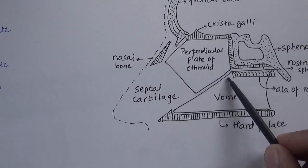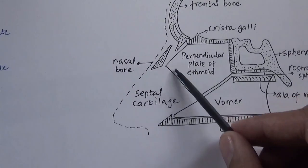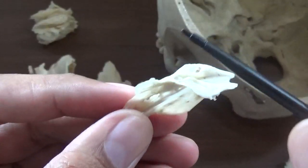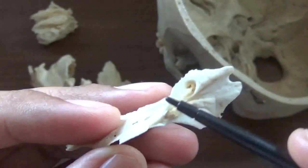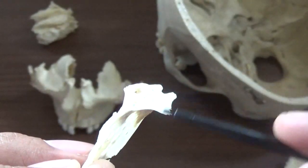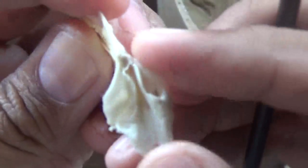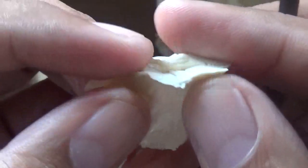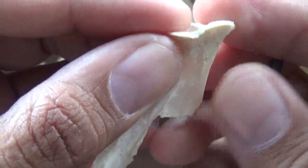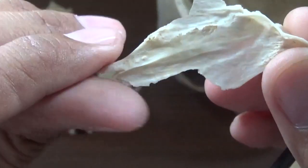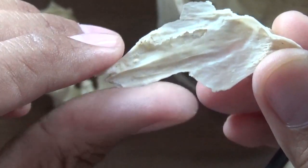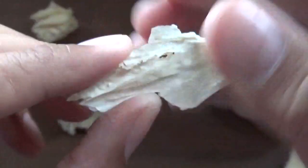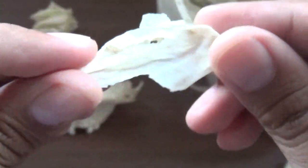The posterior border is free. The inferior border is related to the hard palate and is attached to the hard palate. The anterior oblique border is related to the perpendicular plate of the ethmoid and the septal cartilage. This is the diverging alae, and in between these two there is a groove. This is the superior border, this is the posterior border, this is the inferior border which is broken in the middle, and this is the oblique anterior border.